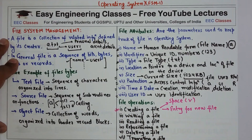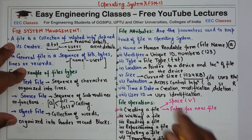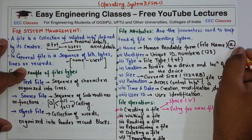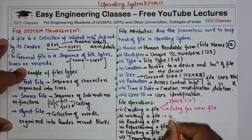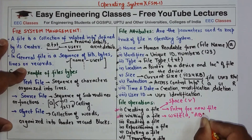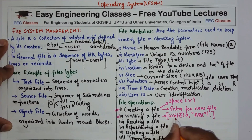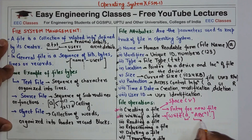To write a file, you make a system call specifying the name of the file and the information to be written. For example, a system call like: write(a, 'abc') — this tells the system to write the content 'abc' to file 'a'. Note this is just an illustrative example and not the exact system call syntax.